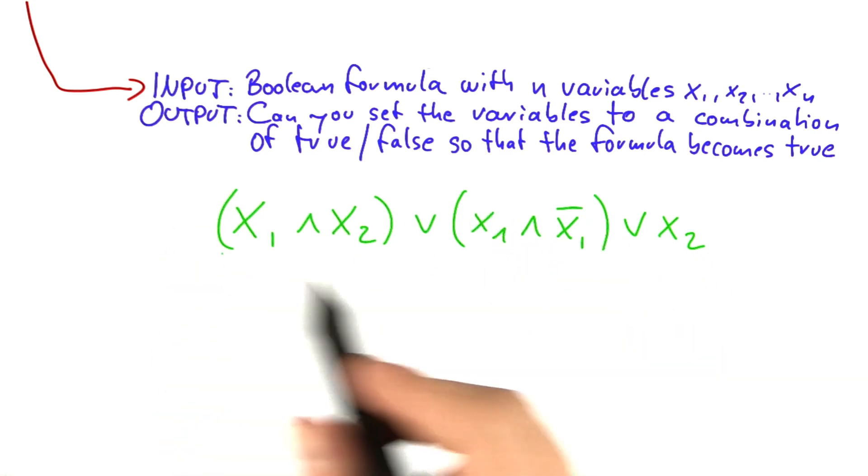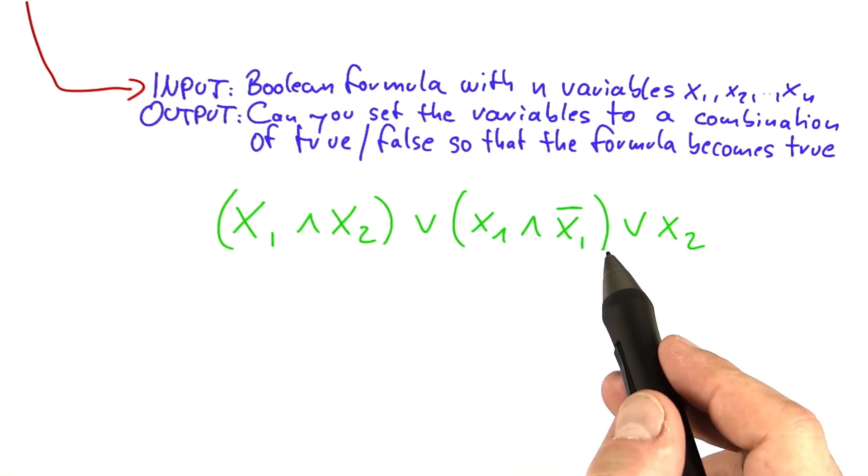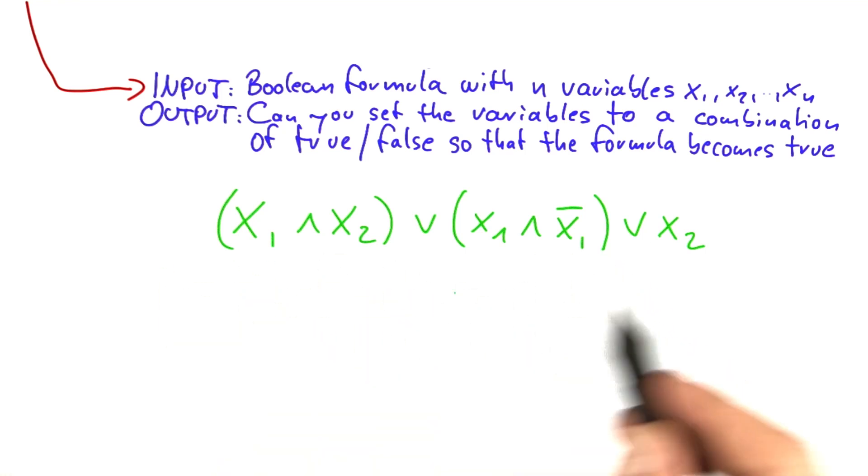But let's come back to SAT. Does this Boolean formula here have a satisfying assignment? Meaning, can you set the variables to a combination of true and false so that the whole formula becomes true? And here the answer is again yes.